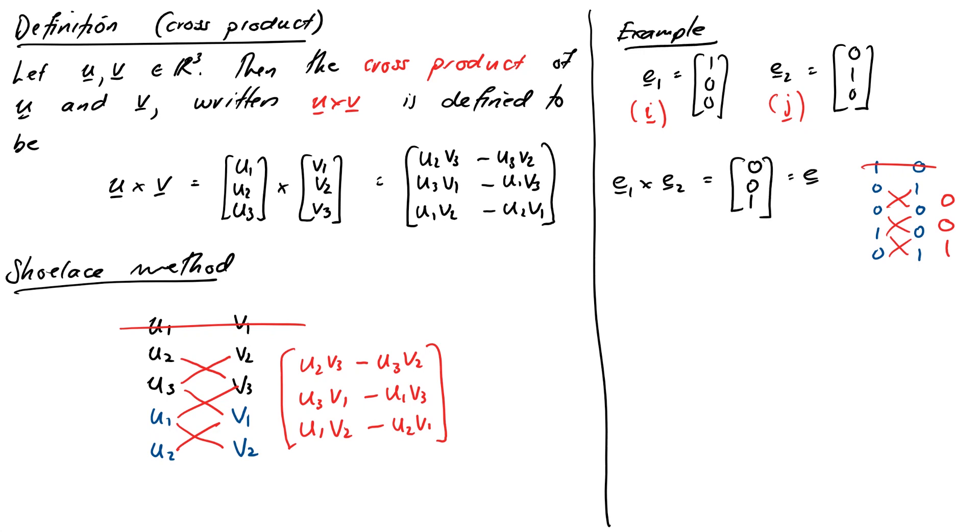Okay, so it gave us the vector (0, 0, 1), which is e₃, or k, if you're a physicist. So it worked. It gave us something orthogonal to both, and we know that's true for a fact.